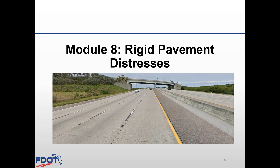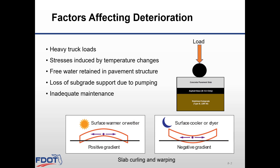Module 8 will discuss the stresses found in rigid pavement. There are many factors that can lead to concrete pavement deterioration, including heavy truckloads, stresses induced by temperature changes that can make the slab curl and warp with warmer and cooler temperatures, free water retaining pavement structure, loss of subgrade support due to pumping, and inadequate maintenance. In order to design and rehabilitate rigid pavement, we must have a good understanding of the causes for the distresses and how to identify them.